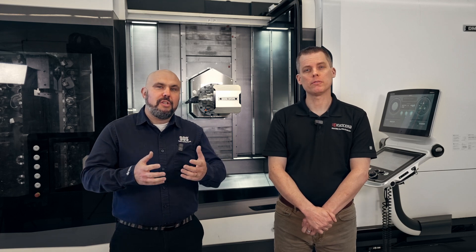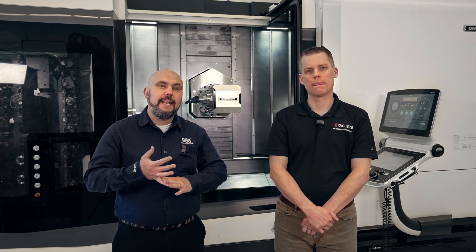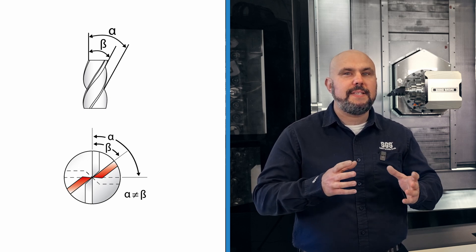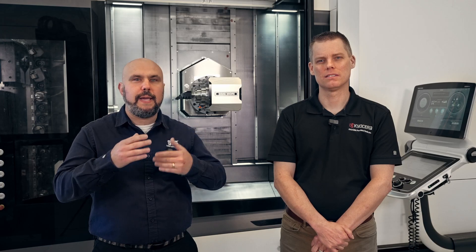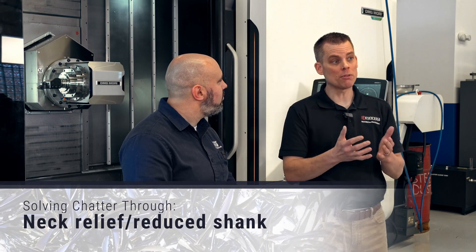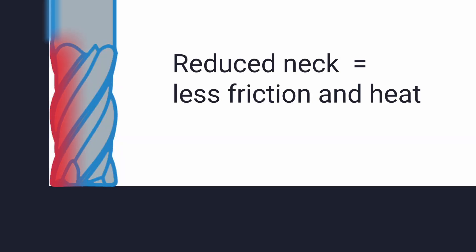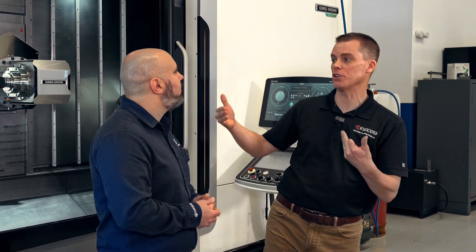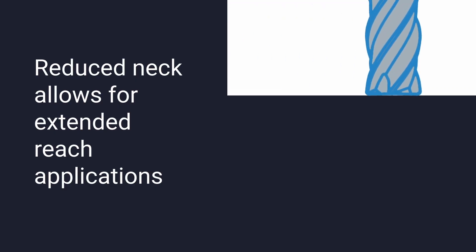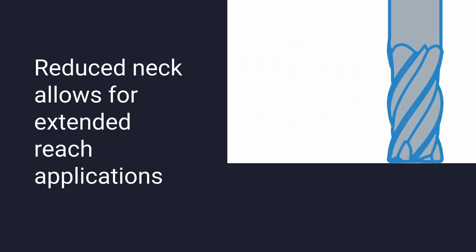For solid round tools, another option is variable indexing and unequal flute spacing. Unequal flute spacing disrupts harmonic vibrations and stops them repeating, preventing resonance and chatter — highly effective in high-speed machining applications, keeping tool engagement smooth and stable. Neck relief minimizes tool contact with the walls in deep pocketing, reducing vibration and build-up. A reduced shank allows deeper cuts with increased rigidity, making them ideal for extended reach applications.